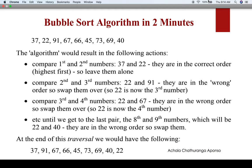In the first step, we compare the first and second numbers: 37 and 22 — they are in the correct order, highest first. Next we compare the second and third numbers. The important thing is we now don't look at the first number. We look at the second and third numbers, which are 22 and 91. They are in the wrong order, so we swap them. So 22 is now the third number.